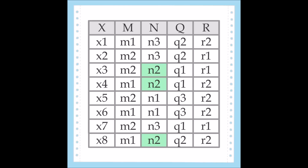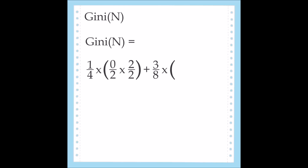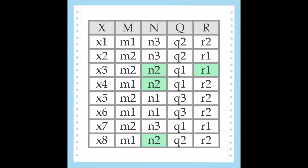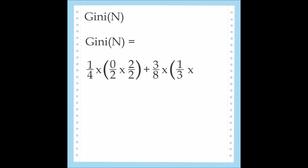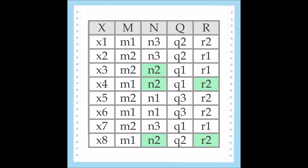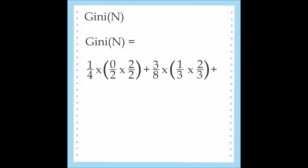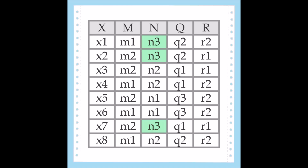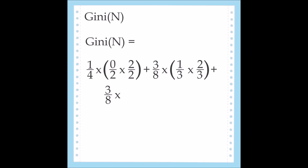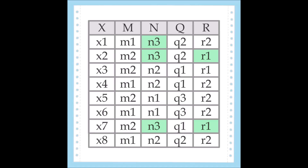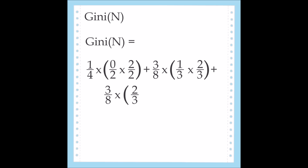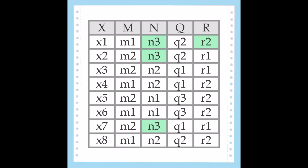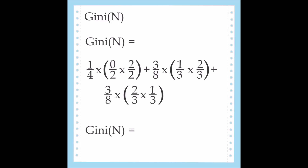N2 appears in 3 out of 8 tuples, and N2 is paired with R1 and R2 2 out of 3 times. N3 appears 3 times in the system. After working it out, the Gini value for attribute N is 1 over 6, or 0.16667.